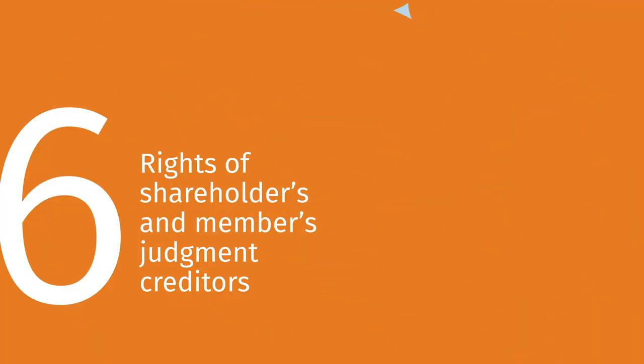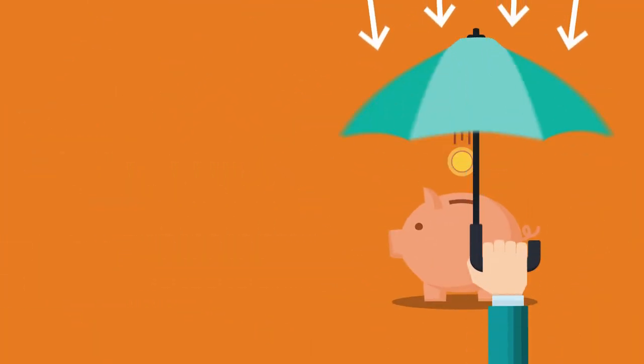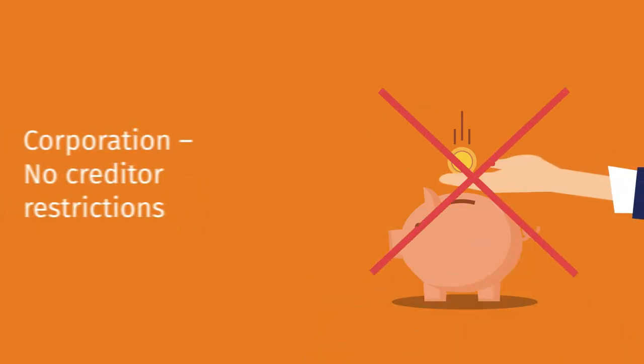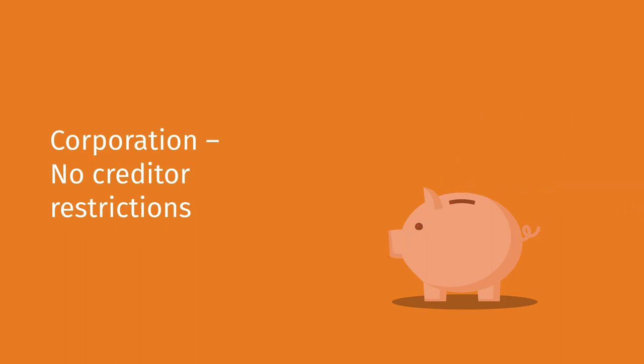Six: a member's judgment creditor is limited to a charging order under an LLC. The creditor cannot receive the member's membership interest. In a corporation, there are no such restrictions on a shareholder's creditor.